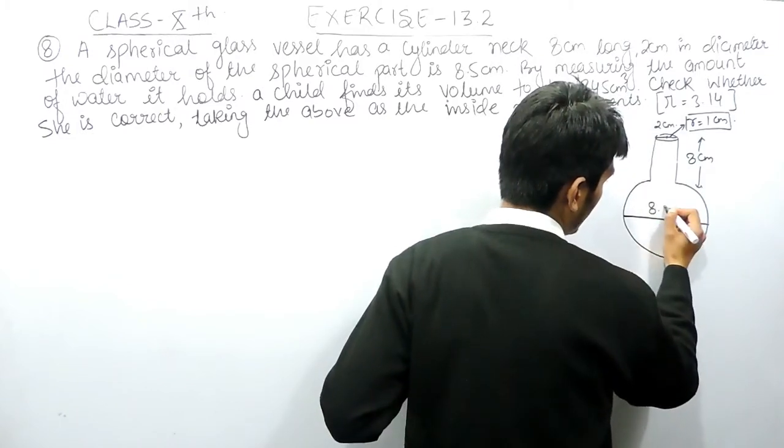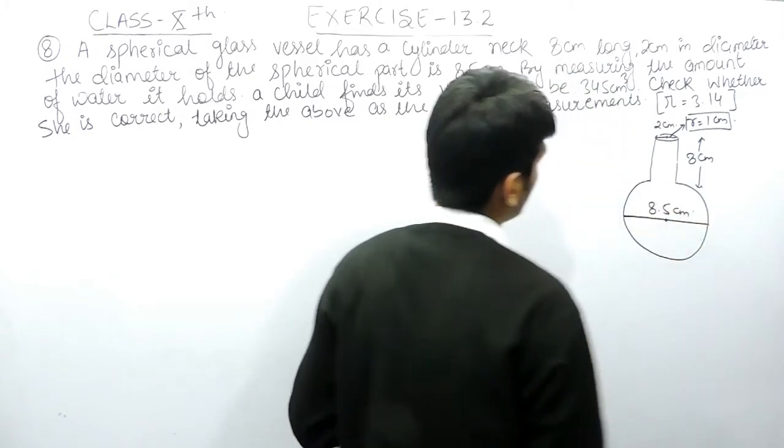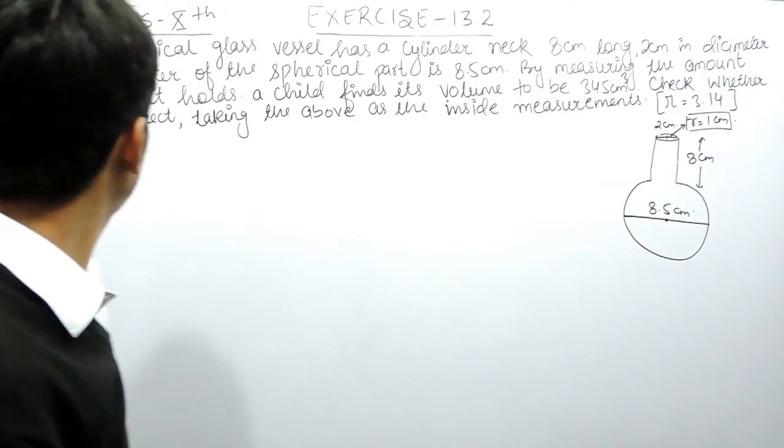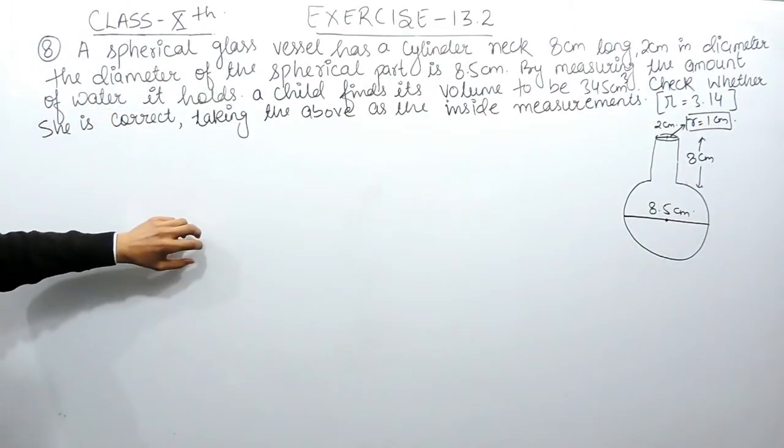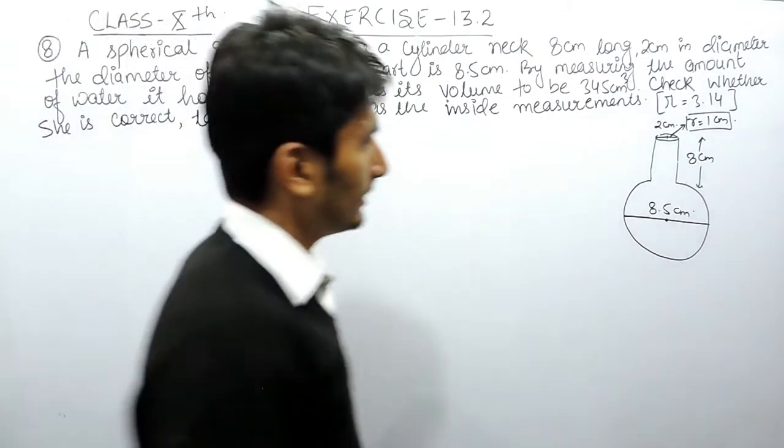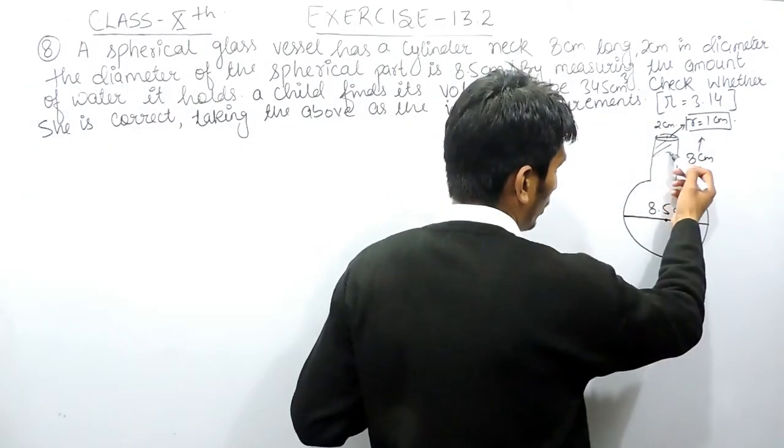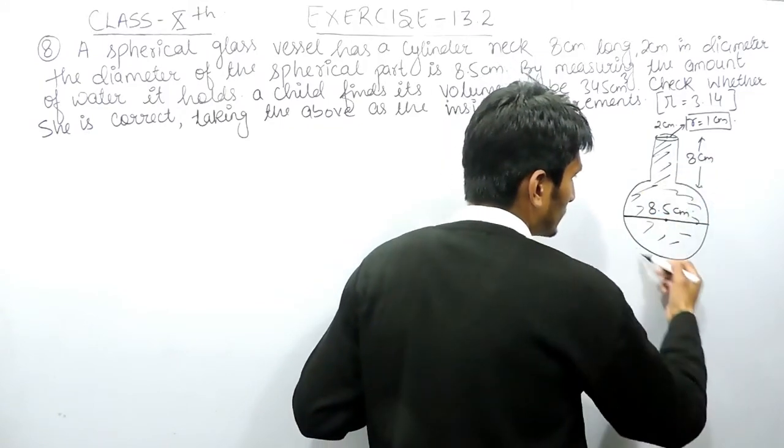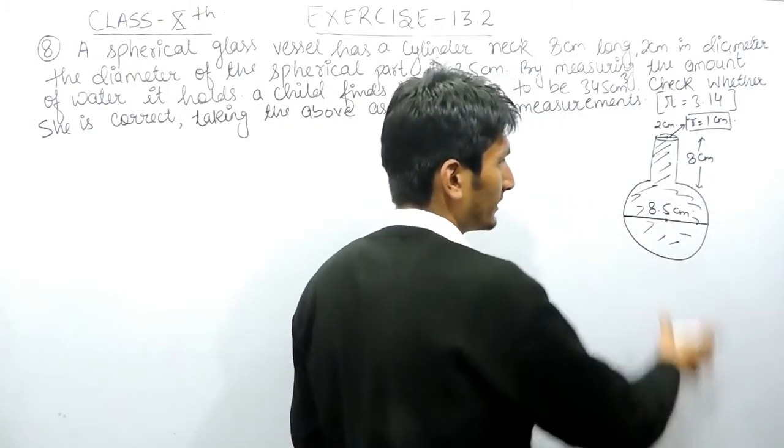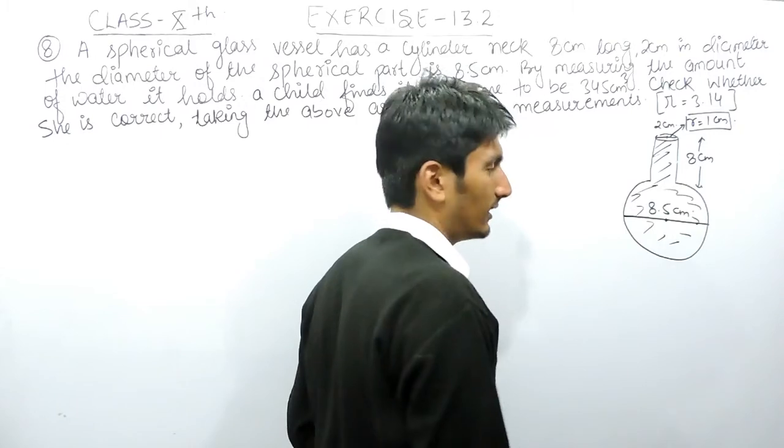You have to check the amount of water it holds. In that case you have to find the volume of this glass vessel. The volume of this glass vessel will be equal to the volume of this cylinder plus the volume of this sphere.